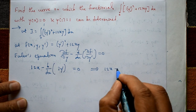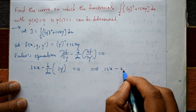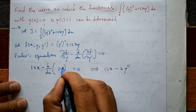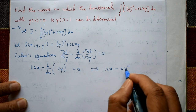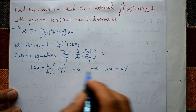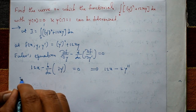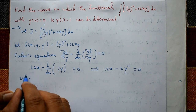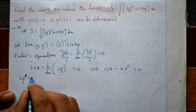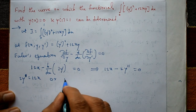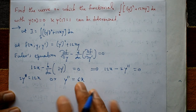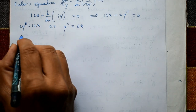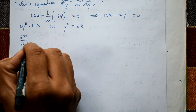This is an ordinary differential equation. Differentiating 2y' with respect to x gives 2y''. So the equation becomes 12x minus 2y'' = 0, which shifts to 2y'' = 12x, giving y'' = 6x.